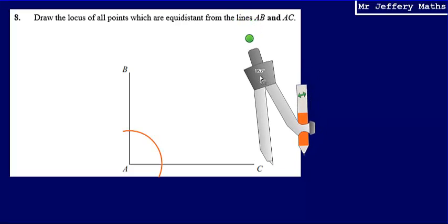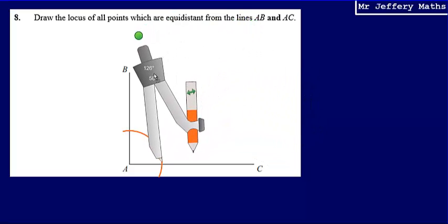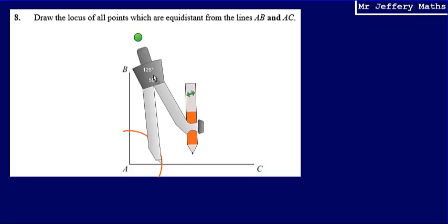The next thing I'm going to do is place the point of the compass on the point at which the arc has cut through one of the straight lines. So I'm going to start with AC, placing my compass on the point at which the arc meets that straight line.